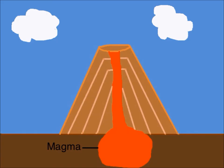Hot liquid rock under the Earth's surface is known as magma. Magma collects in a chamber under the Earth until it is ready to explode.